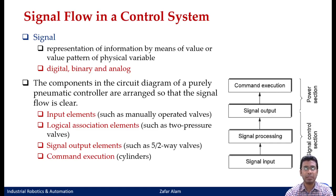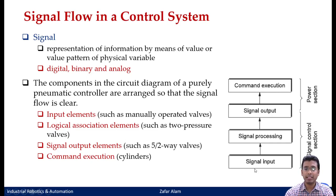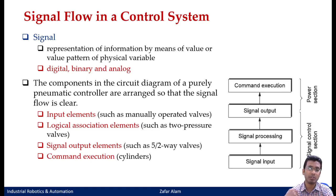The picture to the right shows the flow of signal in a control system, which we had seen earlier. If you see from the bottom, you have your signal input, and then this signal input is actually processed. Once the signal is processed, you have an output, and that output commands a certain amount of work to be done, which results in your command execution.